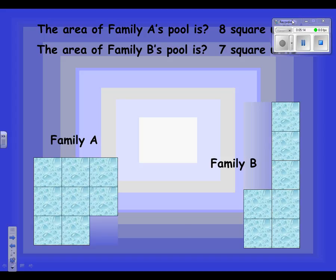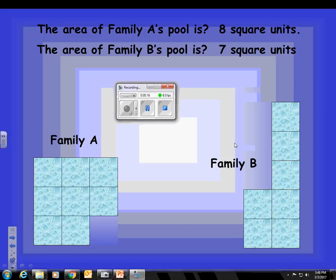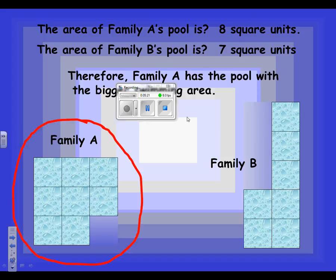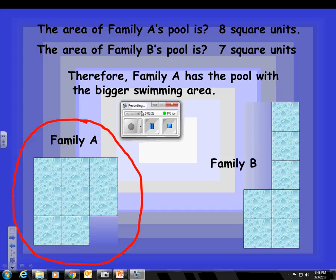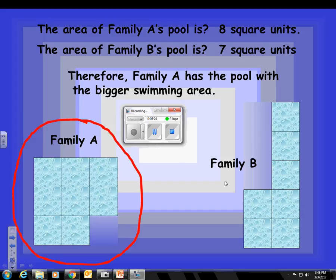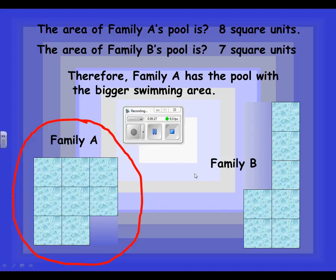Let me move my recorder real fast. There we go. Therefore, Family A's pool is the bigger one because it has more squares.